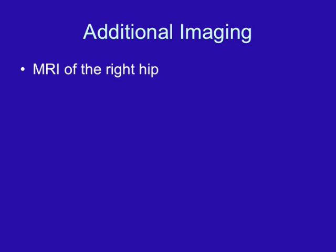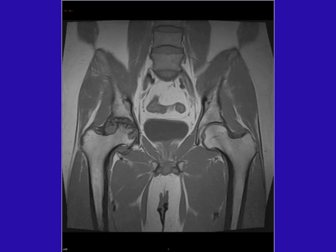Given his history and findings on the plain film, an MRI of the right hip was ordered. Here is a coronal T1-weighted image — the findings are on the right side. Go ahead and take a few moments and try to characterize these findings.